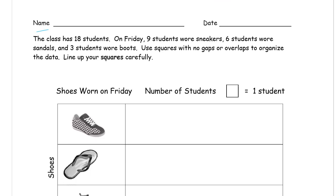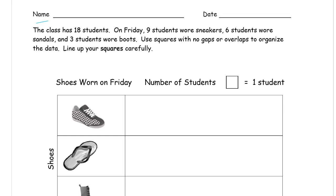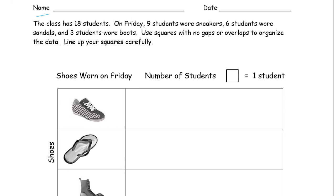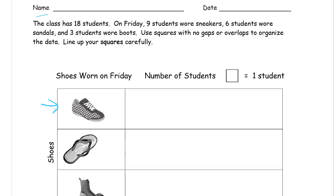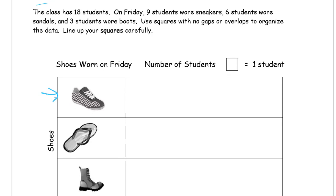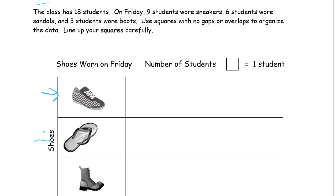We're reading and we're going to make a bar graph here. The class has 18 students. On Friday, nine students wore sneakers — here are the sneakers. Six students wore sandals, these right here, and three students wore boots. There's the boots.